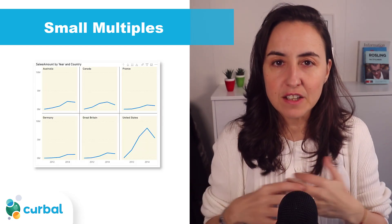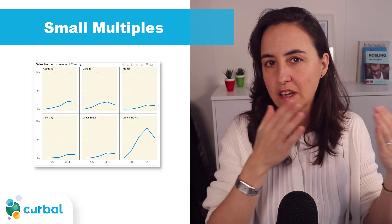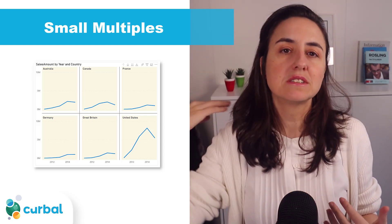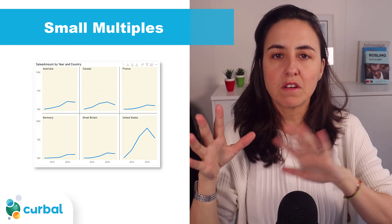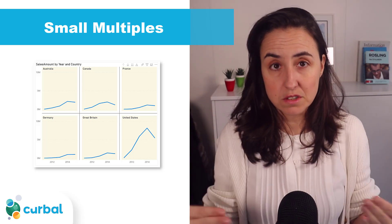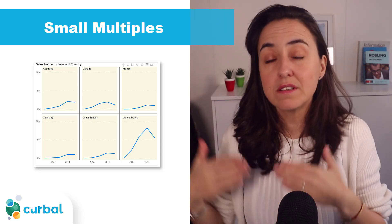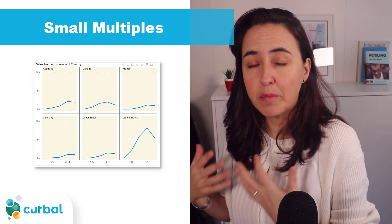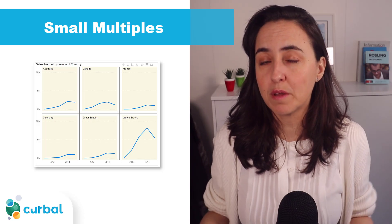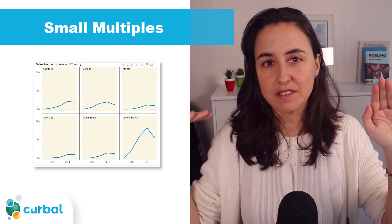The next small multiples update is about background behavior. When you add a background, by default it will now be no fill at zero percent transparency, which is nice. However, be aware that all existing small multiple visuals with a background will get reset to that, so you will have to reformat them. After that, the default behavior will be zero percent transparency and no fill.